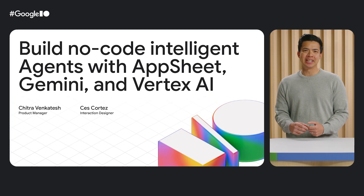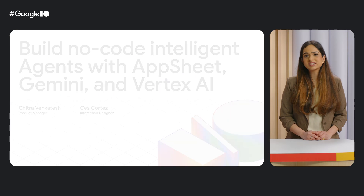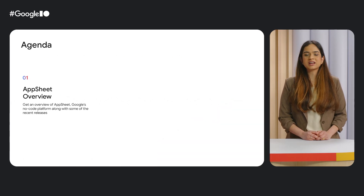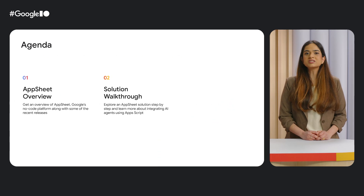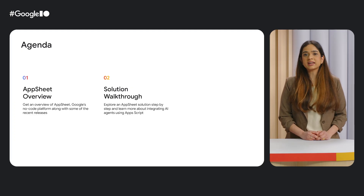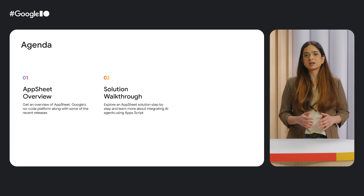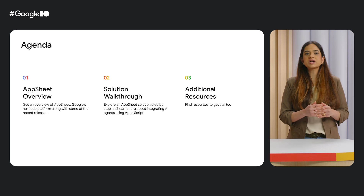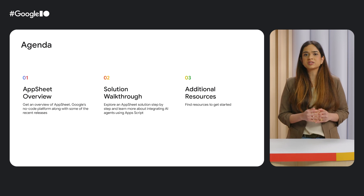We will be walking through how to build an AppSheet app that's powered by an AI agent. First, let's kick things off with a quick overview of AppSheet and what's new. After that, we'll jump into a demo of an AppSheet solution — an AI agent integrated into an AppSheet application using Apps Script, a scripting platform for lightweight application development. And to wrap up, we'll share some useful resources.